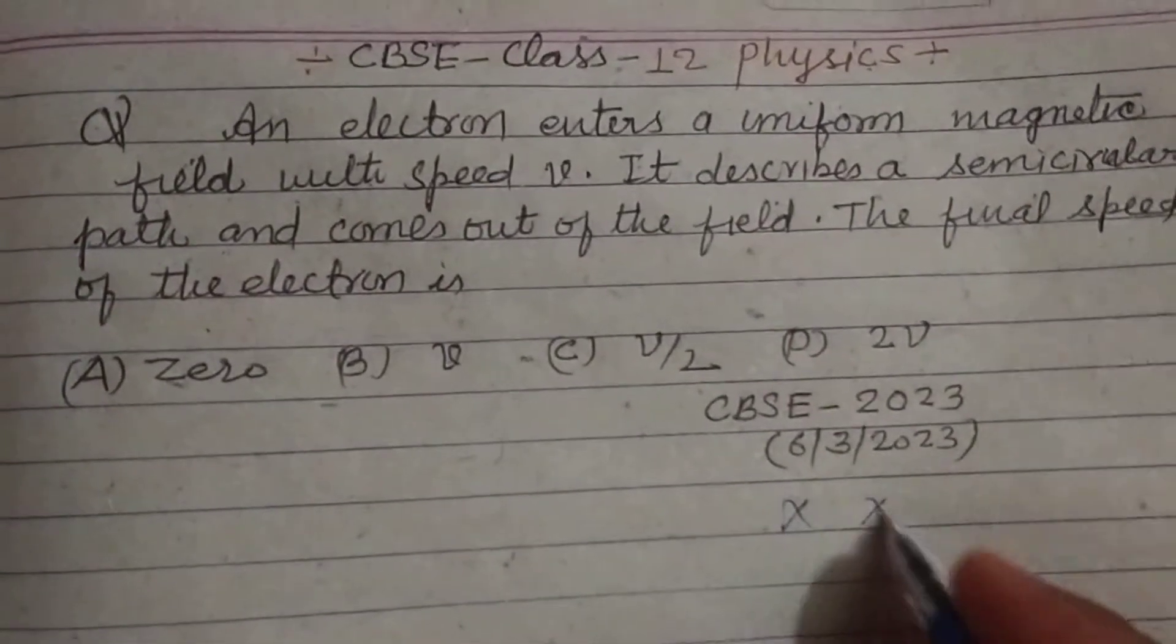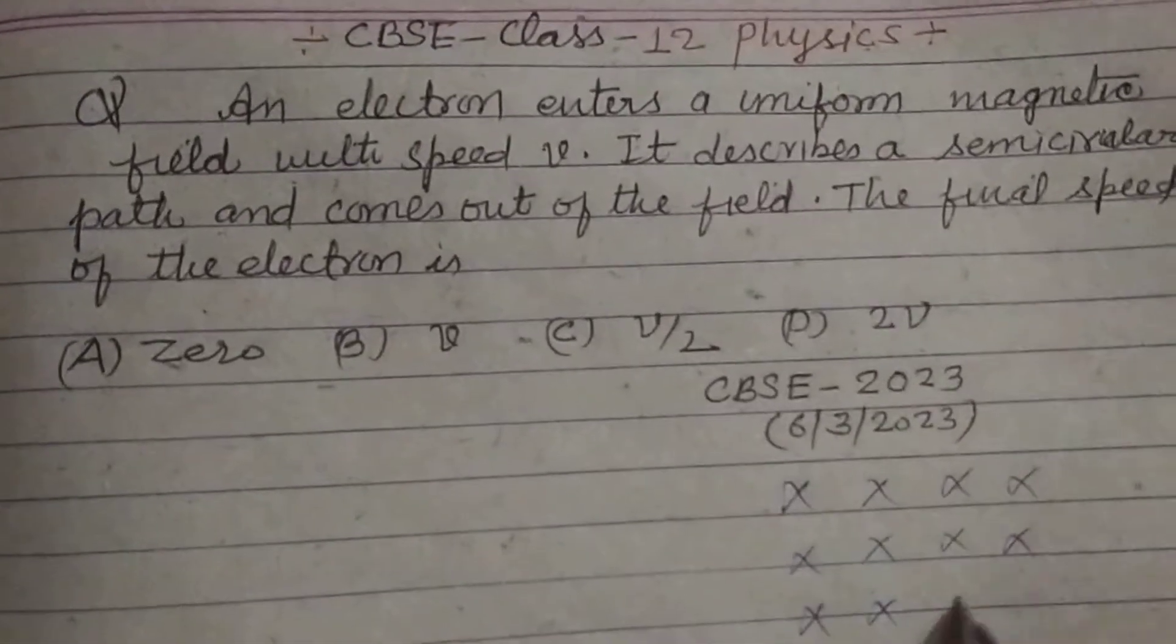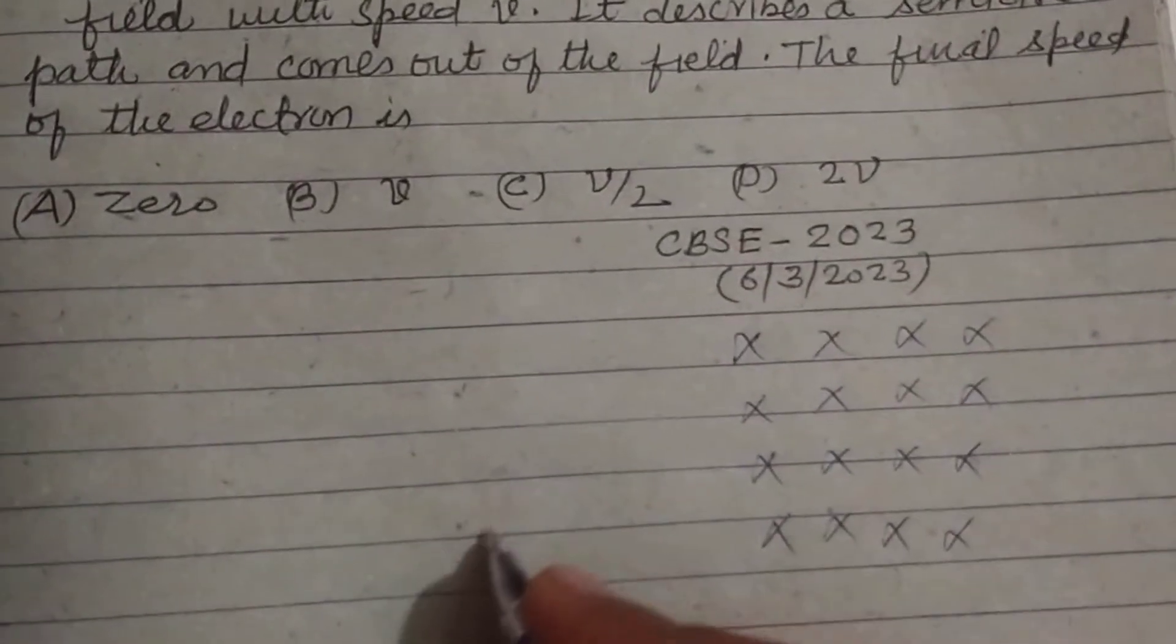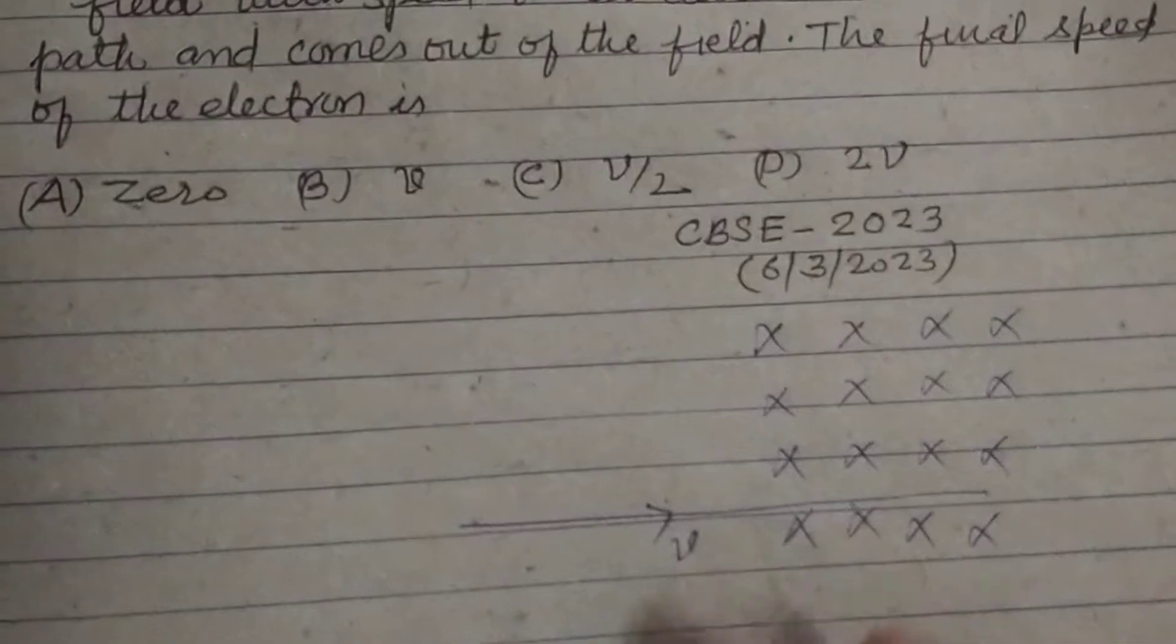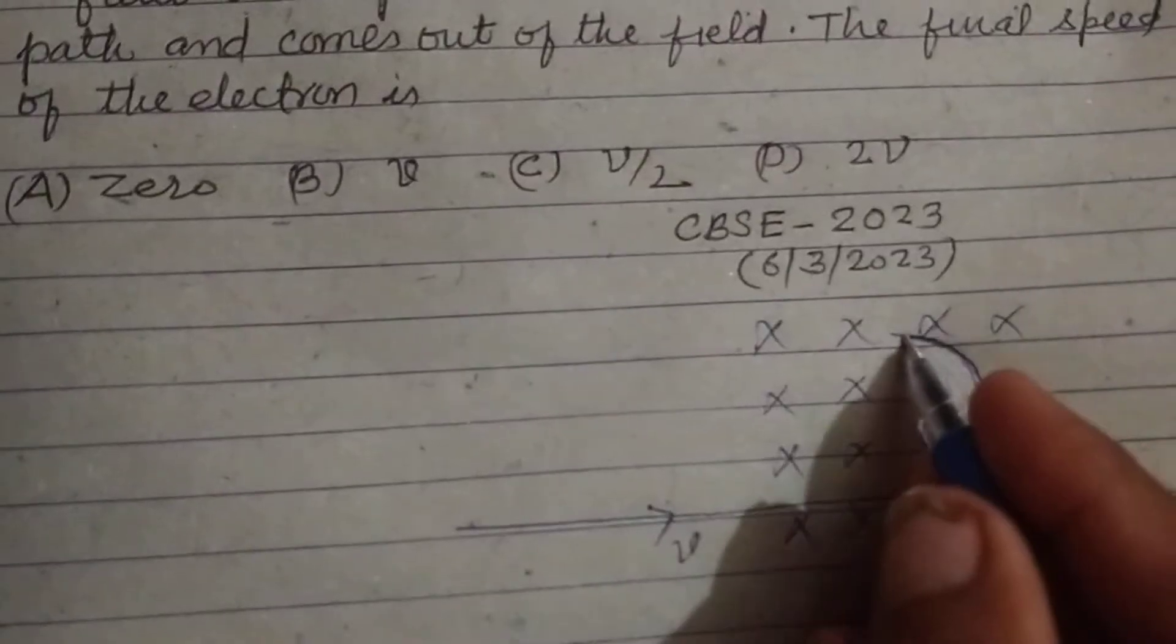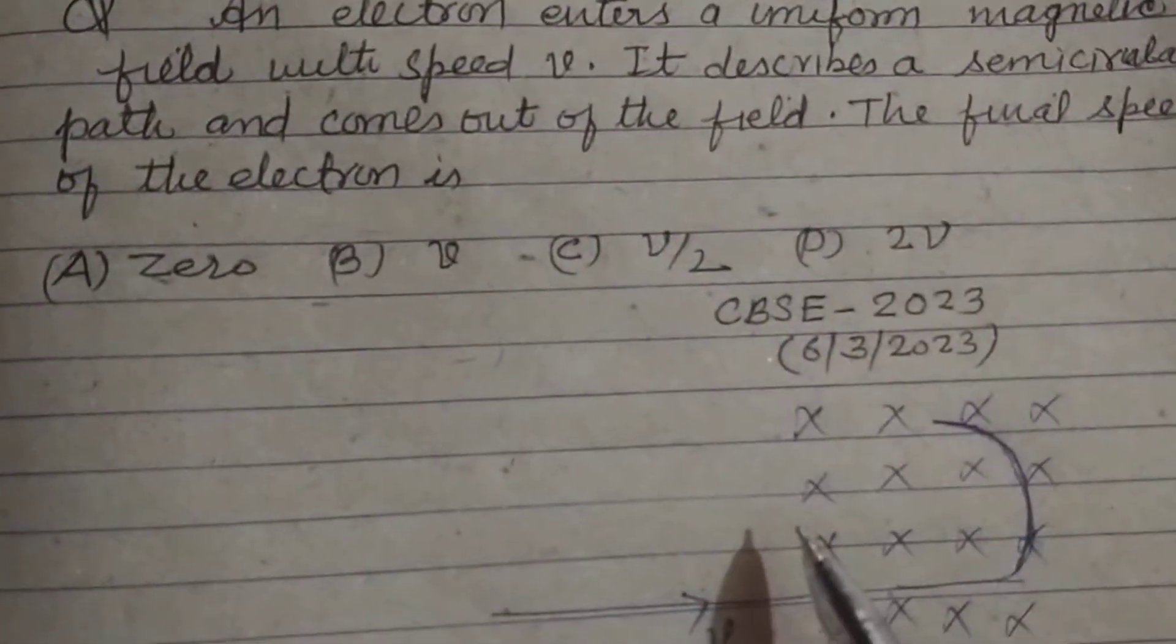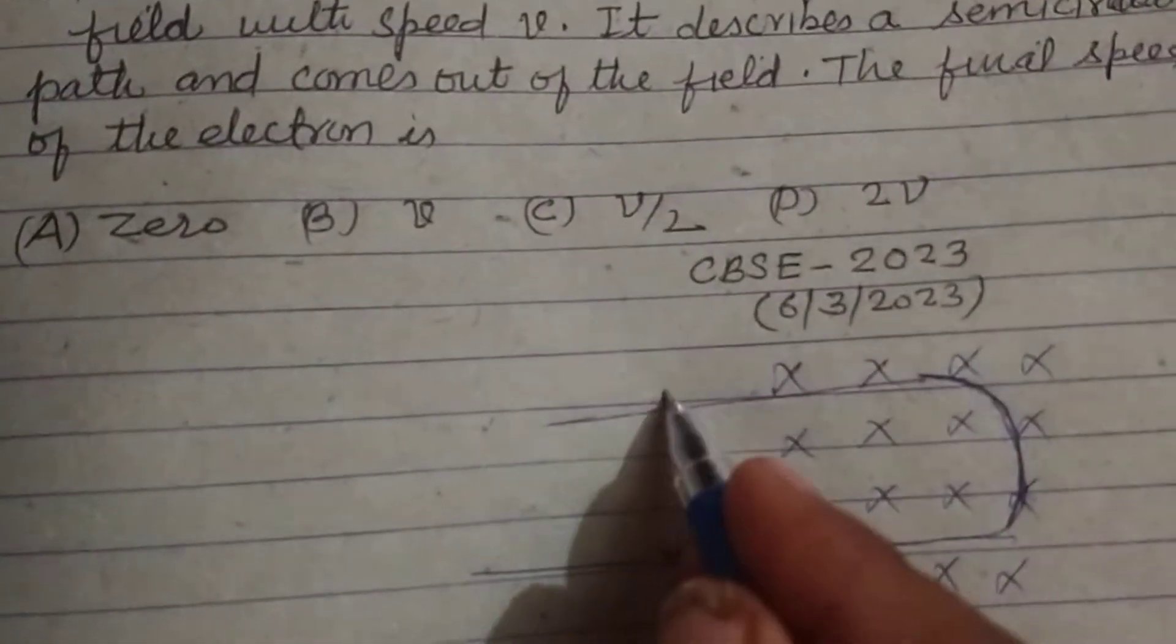So here is a uniform magnetic field. An electron enters this magnetic field with velocity v and makes a semicircle. It describes a semicircular path and comes out of the field. The final speed of the electron is?